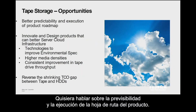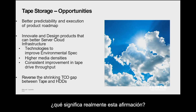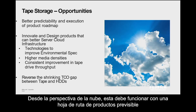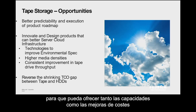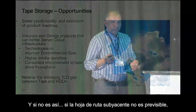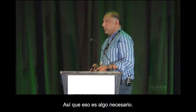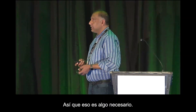One thing I would say is the predictability and execution of the product roadmap. From a cloud perspective, cloud needs to execute on a predictable product roadmap so that it can offer the capacities as well as the cost improvements which customers desire. If the roadmap behind that is not predictable, then it becomes very hard. So that's one thing that is needed.